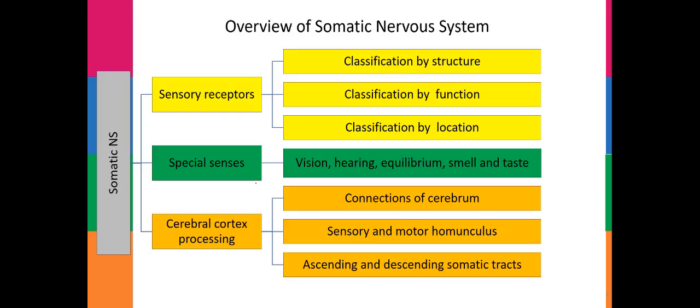We're going to cover three main areas. The first is sensory receptors and how we classify them by either structure, function, or by their location. Secondly, we'll look at special senses, which includes vision, hearing, equilibrium, taste, and smell. Lastly, we'll look at the processing that occurs in the cerebral cortex — the gray matter forming the sulci and gyri — including the homunculus and ascending and descending somatic tracts.